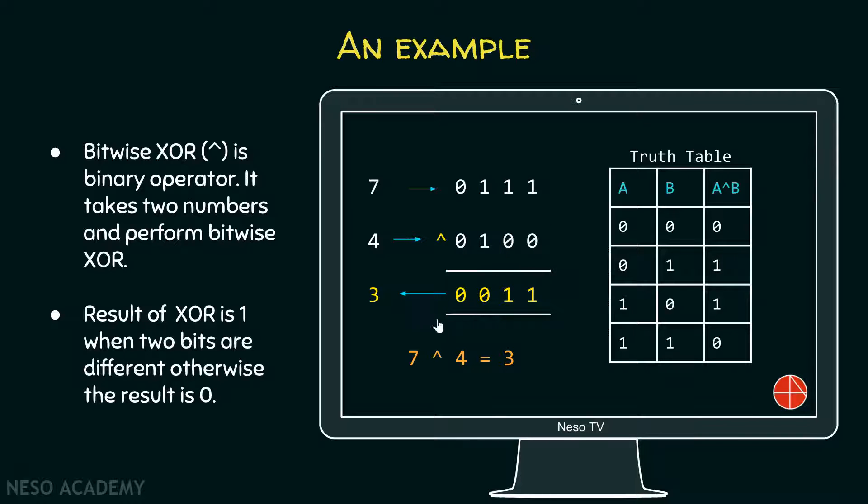Therefore, the final output is 0011, which is equal to three in decimal representation. Therefore, seven XOR four is equal to three.